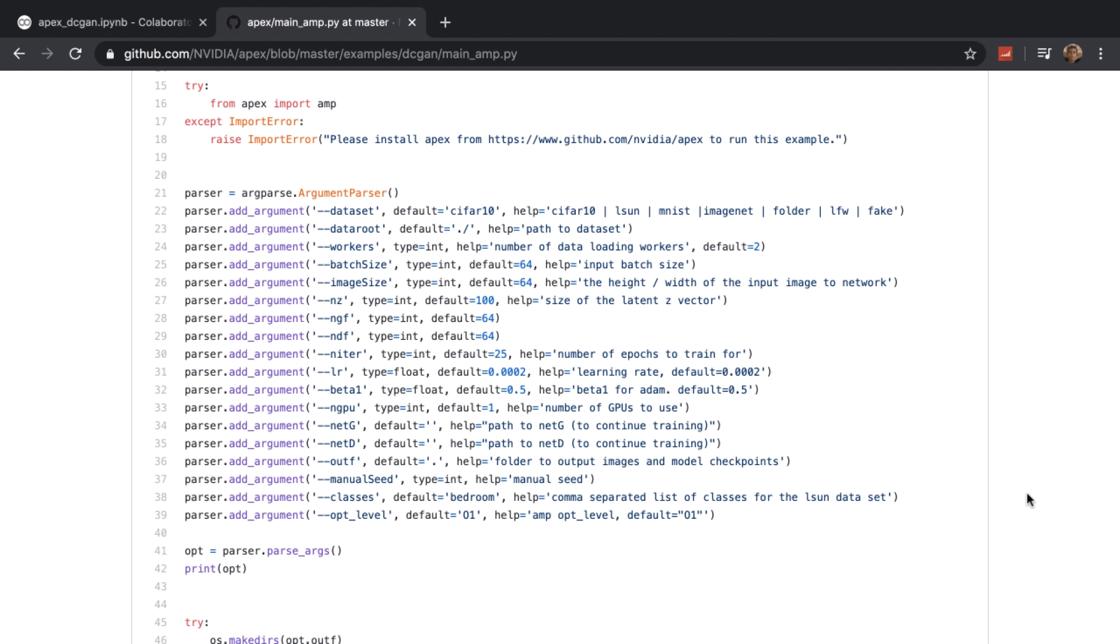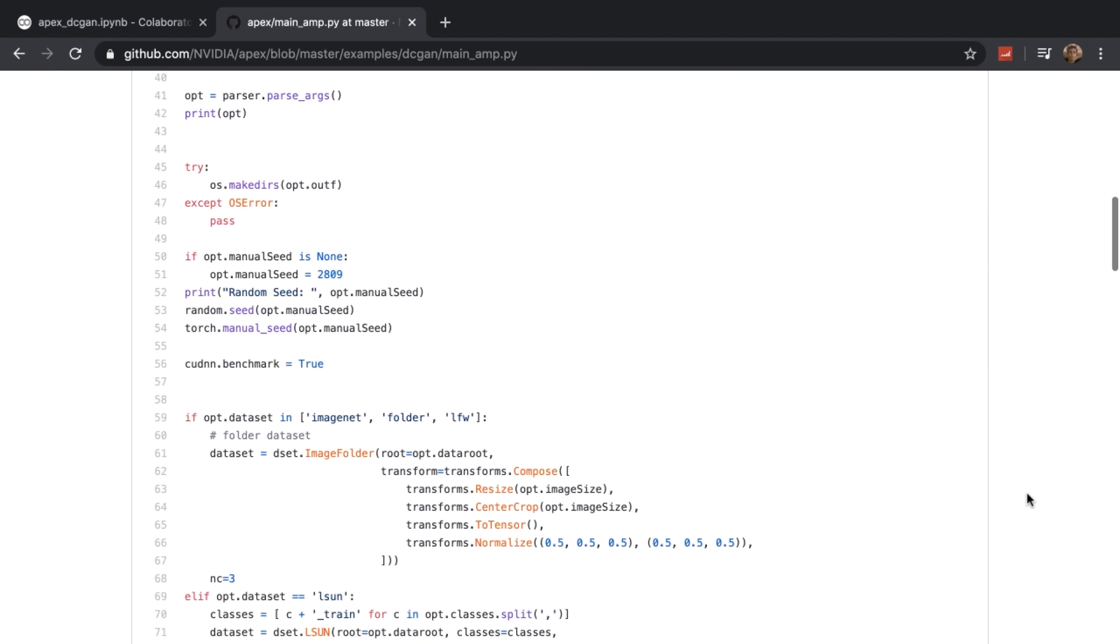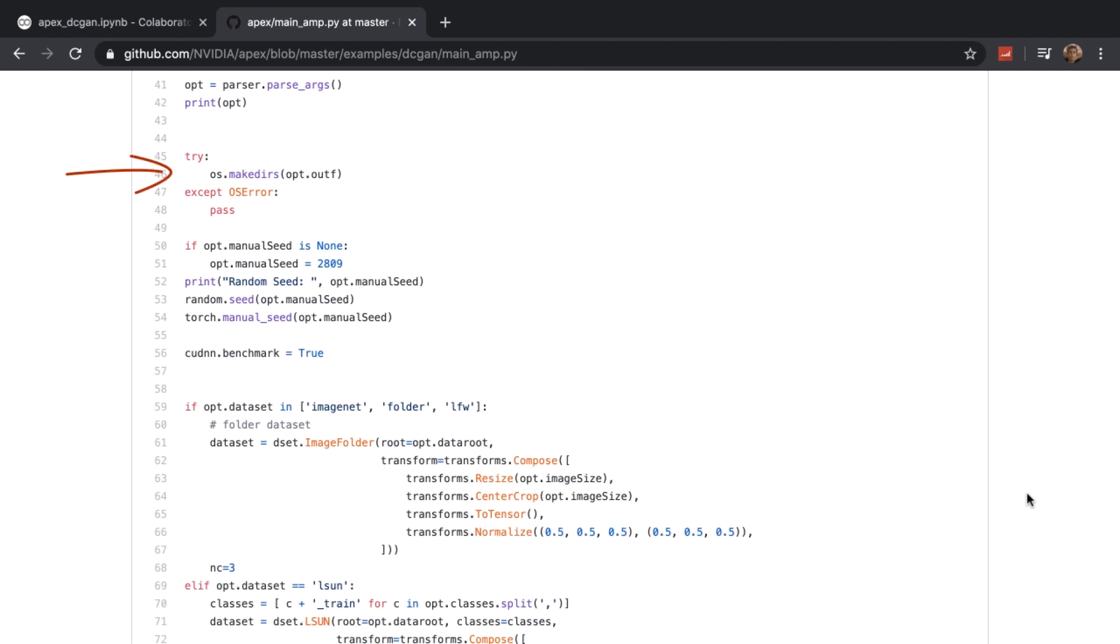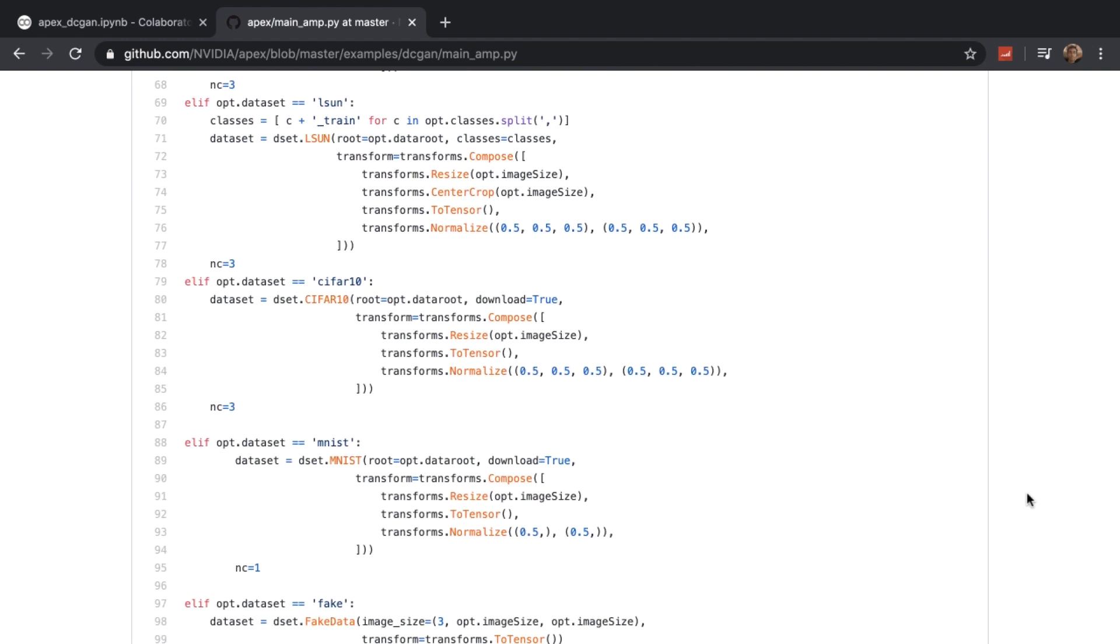Back in our code, we can also pass in parameters related to our discriminator and generator too. Next the output directory is created. Depending on the dataset you choose, the code will load that in. We're using the CIFAR-10 dataset, so only this chunk of code is executed.